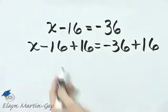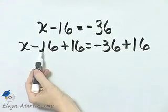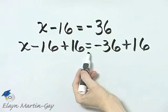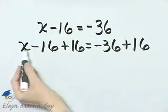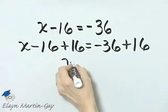Now, notice what happens. If you need to rewrite this, that's fine. This is like negative 16 plus 16, so that's 0, and x plus 0 is simply x.